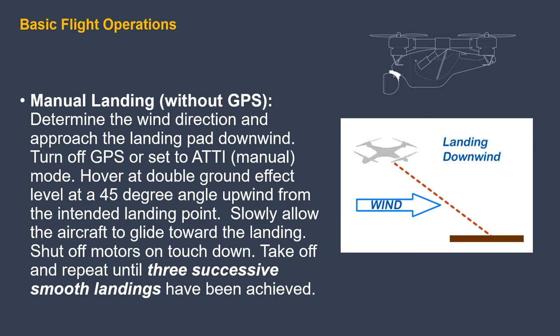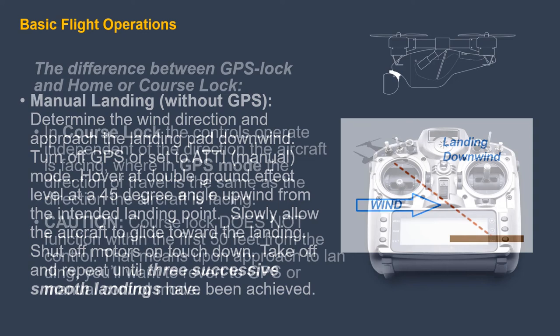Manual landing practice without GPS: determine the wind direction and approach the landing pad downwind. Turn off GPS or set to ATTI or manual mode. Hover at double ground effect level at a 45-degree angle upwind from the intended landing point, then slowly allow the aircraft to glide toward the landing point. Shut off the motors on touchdown, then repeat until you have achieved three successive smooth landings. Practice manual landings because GPS is not a constant — from time to time GPS may not be available due to government testing, interference, and other signal issues.